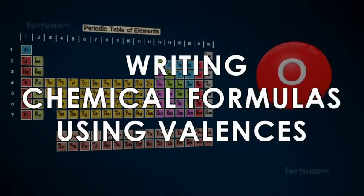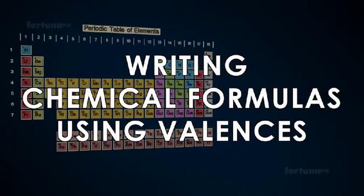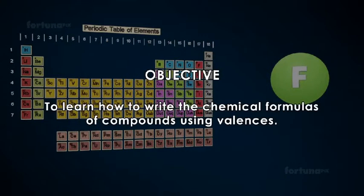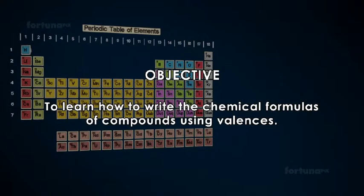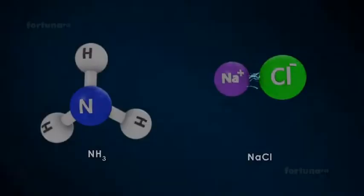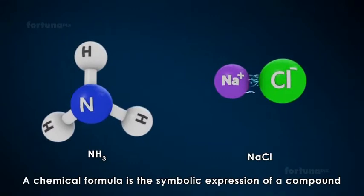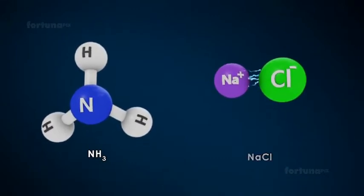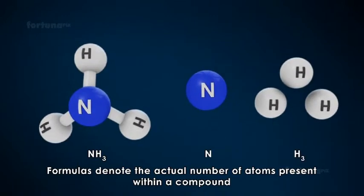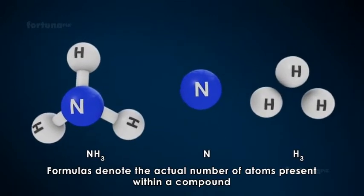Writing chemical formula using valences. Objective: To learn how to write the chemical formulas of compounds using valences. A chemical formula is the symbolic expression of a compound. Formulas denote the actual number of atoms present within a compound.